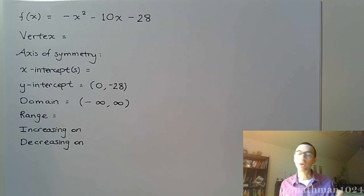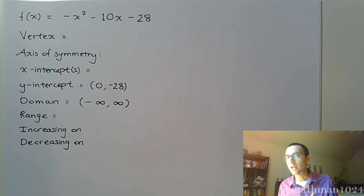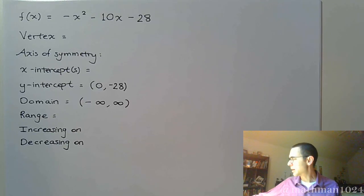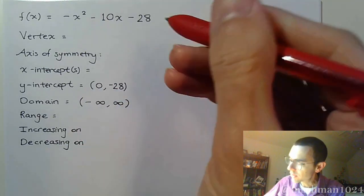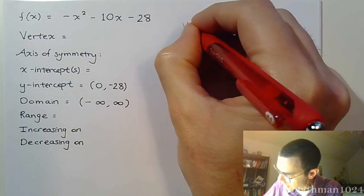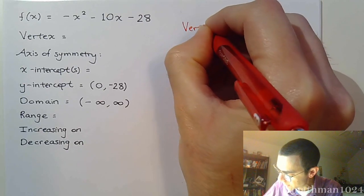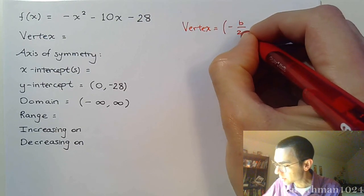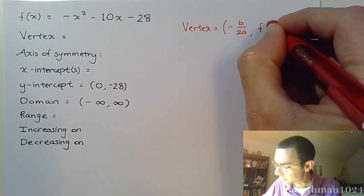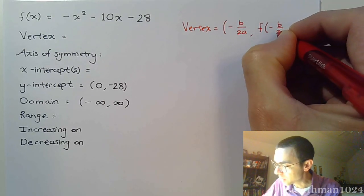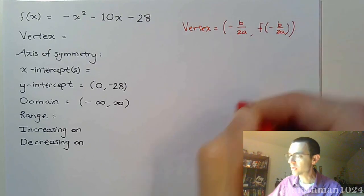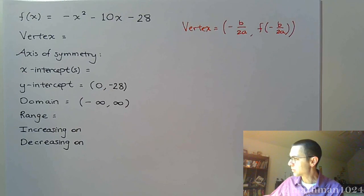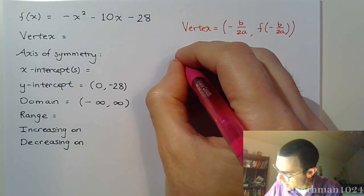We can go ahead and talk about the vertex, or try for the x-intercept — it doesn't really matter which one you start with. Let's start with the vertex. To find the vertex in standard (general) form, the x-coordinate is negative B over 2a, and the y-coordinate is found by plugging that x value back into the function.